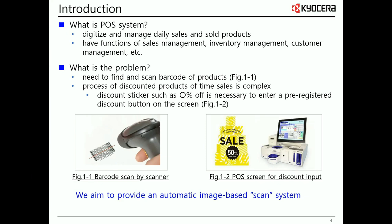If a discounted barcode sticker is affixed to the product, it is easy for the staff to register the discount information just by passing it through the scanner as a normal checkout. But if there is a discount sticker such as 5% off, the staff will need to find and enter a pre-registered discount button on the screen or press a manual discount rate button to set the discount information in the system. Based on the various complexity of accounting operations, we aim to provide an automatic image-based scan system to facilitate the accounting process at each register.